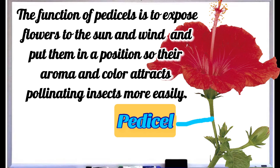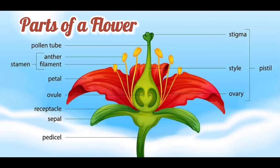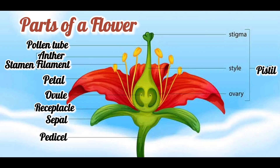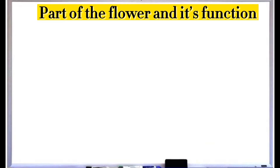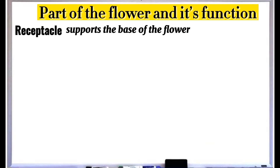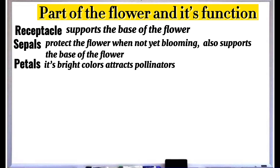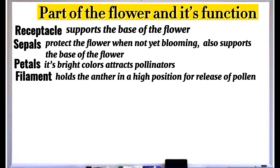Summary — parts of a flower: petal, sepal, receptacle, ovule, pedicel, pollen tube, stamen (consisting of anther and filament), and pistil (consisting of stigma, style, and ovary). Functions: the receptacle supports the base of the flower. Sepals protect the flower when not yet blooming and also support the base of the flower. Petals — their bright colors attract pollinators. The filament holds the anther in a high position for release of pollen.